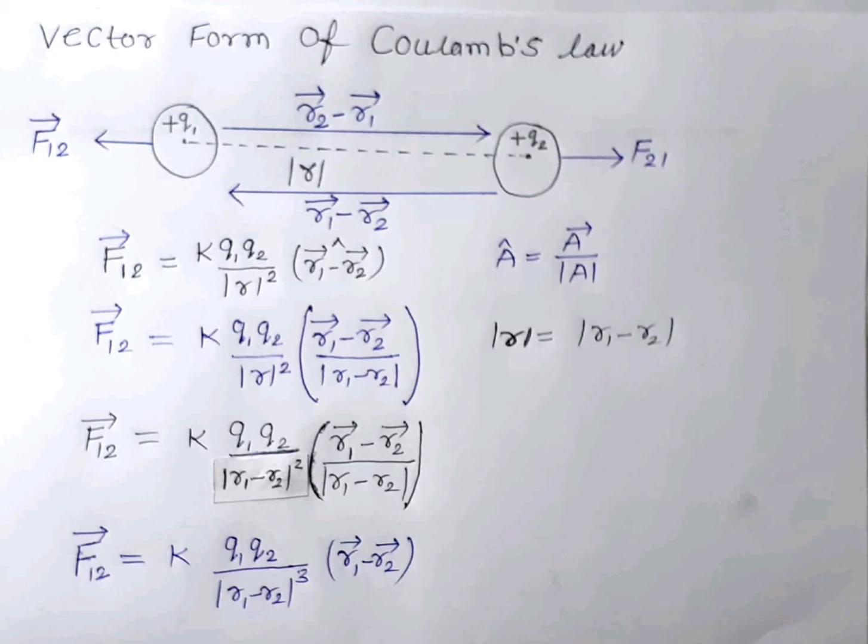Similarly, the force on q2 due to q1 is F21 vector. The direction of force is r2 vector minus r1 vector, which means final position minus initial position.